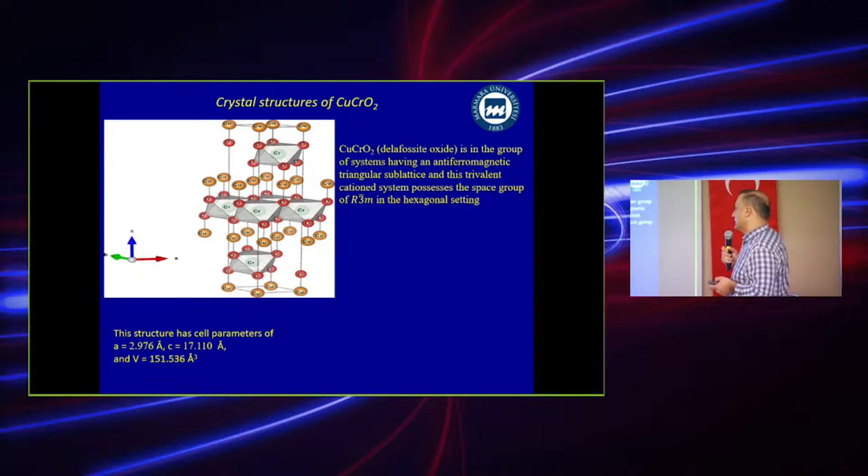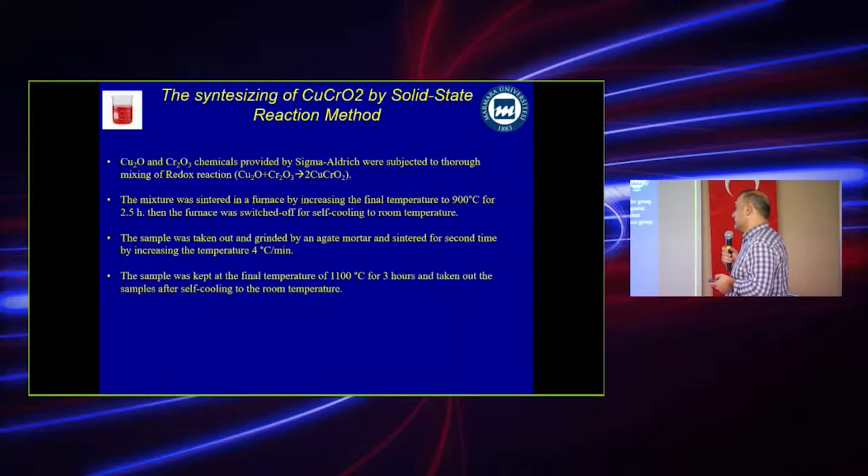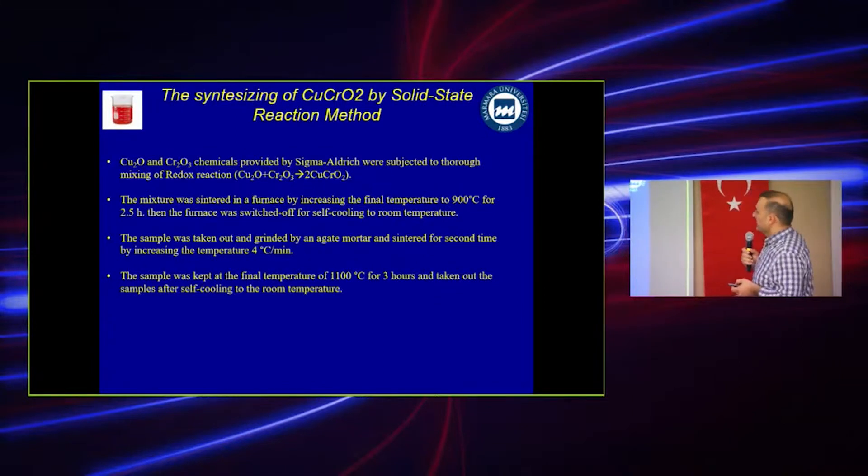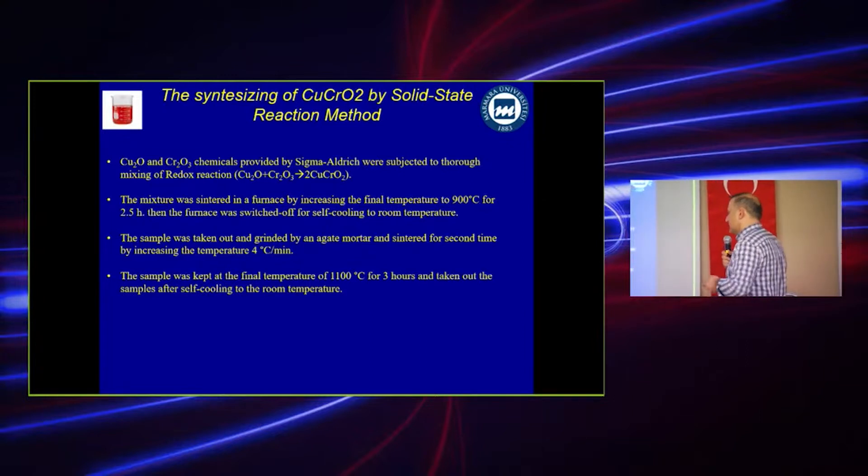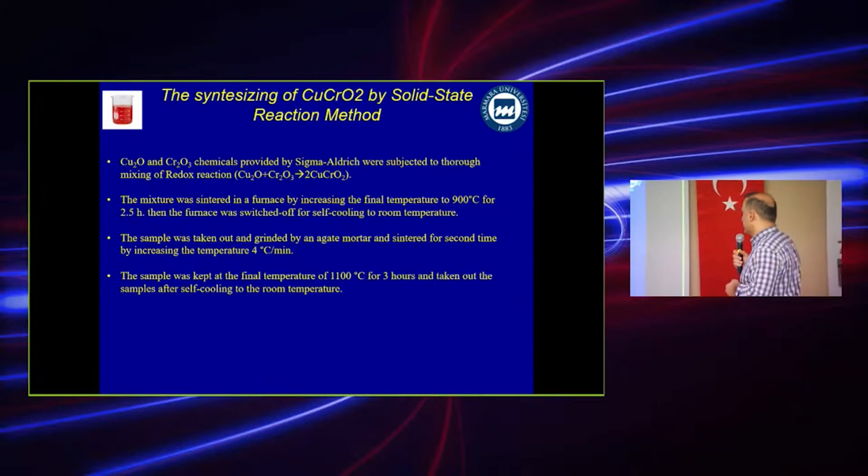In the synthesizing part we used these chemicals: copper oxide and chromium oxide, chemicals provided from Sigma-Aldrich. We used solid-state reaction given right here. The mixture was entered in the furnace by increasing the final temperature to 900 degrees Celsius for 2.5 hours, then the furnace was cooled for self-cooling to room temperature.